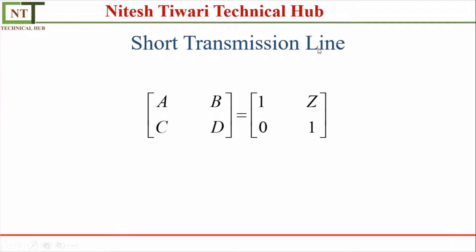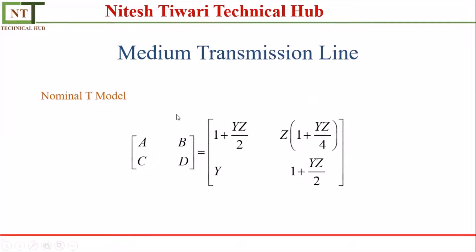For the short transmission line, the value of A is 1, B is Z, C is 0, and D is 1. This means we only need to compute the value of Z to calculate the ABCD parameters of the short transmission line. To compute Z, we need to know the resistance and inductance per kilometer.